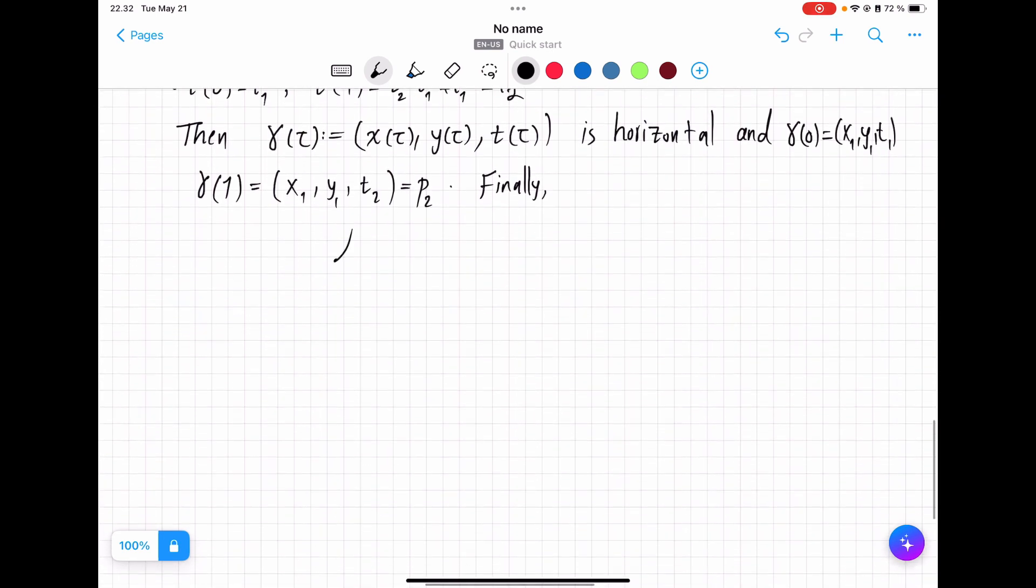finally, length of gamma, the horizontal construction that we had, equals the length of projection of gamma. Again, previous theorem of previous page. And, this is the length in R2 of gamma bar.